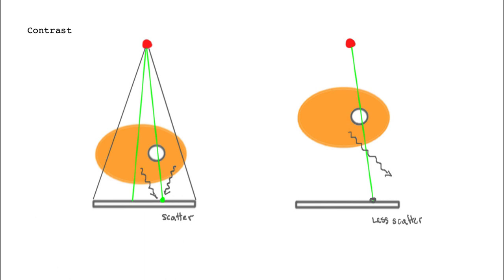That geometry with more scatter gives you more of these noise photons — these useless photons at the detector — that don't contain any information about the anatomy of the patient. They just add to the extra noise signal.